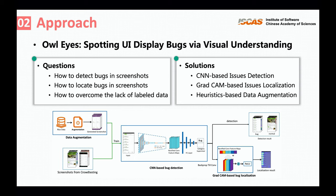It also uses GradCAM to localize the issues in the screenshots for guiding developers to fix the bugs. As shown in the figure, given a screenshot, our CNN-based model can classify whether it has any UI display issues. Once the issue is confirmed, our model can further localize the detailed issue position on the screenshot using a GradCAM-based model for guiding developers to fix the bug.